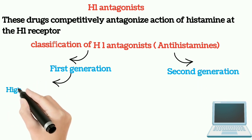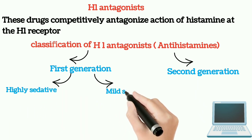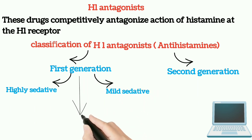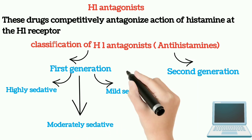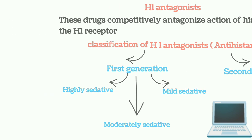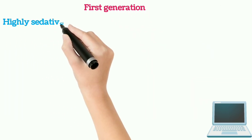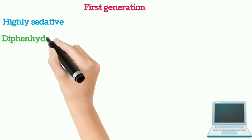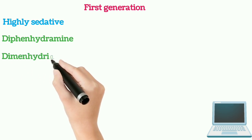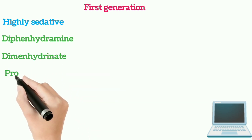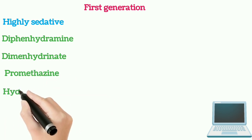1st generation antihistamines are subclassified as highly sedative, mildly sedative, and moderately sedative. Highly sedative 1st generation drugs include diphenhydramine, diphenhydrinate, promethazine, and hydroxyzine.